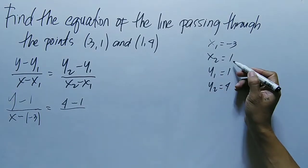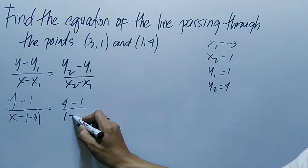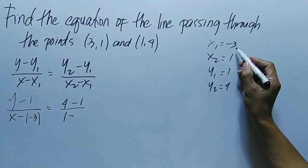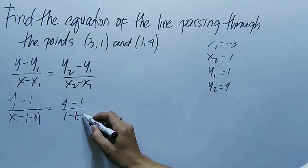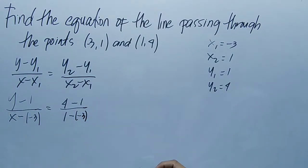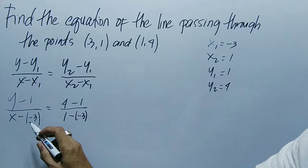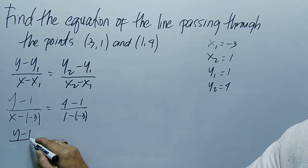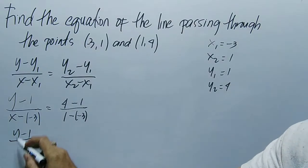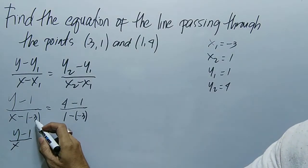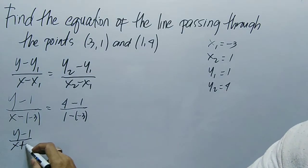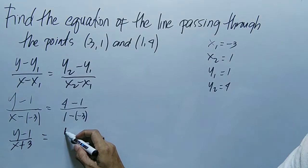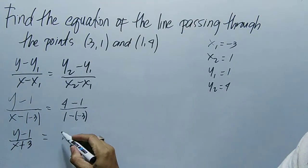This equals y₂, which is 4, minus y₁, which is positive 1, then x₂ substitute, this is 1 minus x₁, which is -3. So let's simplify. y - 1 over x minus negative times negative 3, that is positive 3.